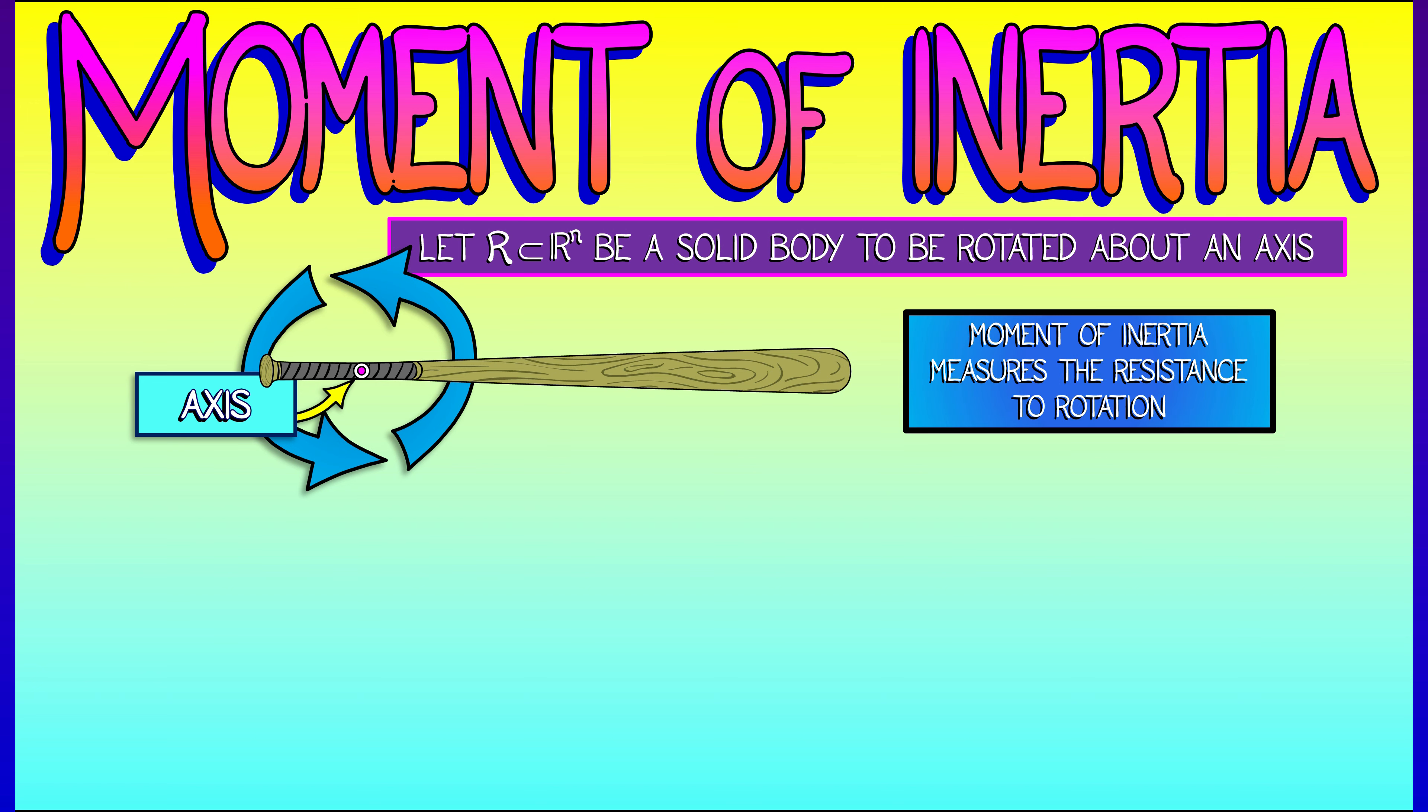Then the body with the lowest moment of inertia spins the fastest, gets going more quickly, whereas the body with the higher moment of inertia, where the mass is distributed farther away from the axis, takes a bit longer. And that's how moment of inertia works.